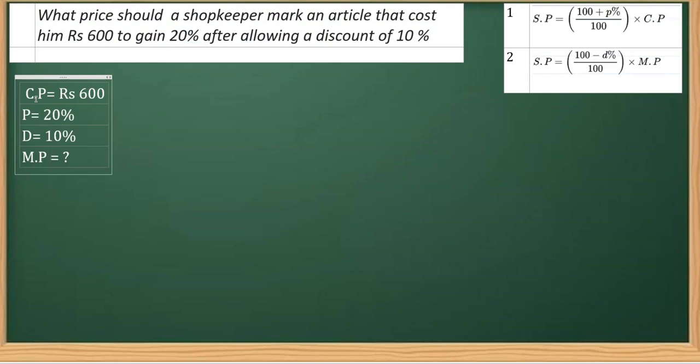Now once we have written symbolically, we should look for the suitable formula. As you can see, in order to get MP we need SP, right? So as of now we don't know the selling price, but we know the cost price. So using this relation, as we know CP, replacing CP with its value and profit percent, we can get the selling price. We are going to use the first formula here, and then the second formula to get this mark price.